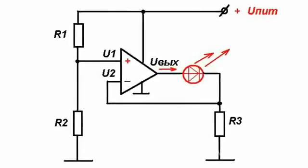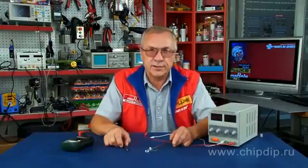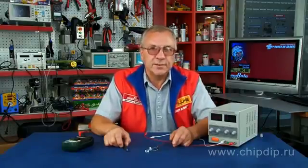The operational amplifier has a peculiar state when the voltage difference at its inputs is equal to zero, which is achieved by changing the output voltage of the amplifier. If the voltage difference is positive, the output voltage will increase. If, on the other hand, it is negative, the output voltage will respectively decrease.